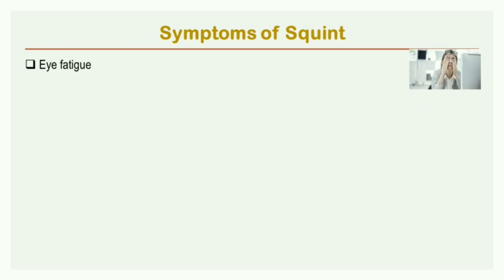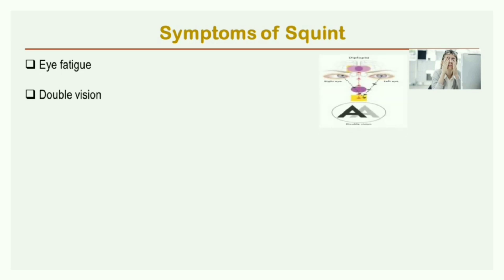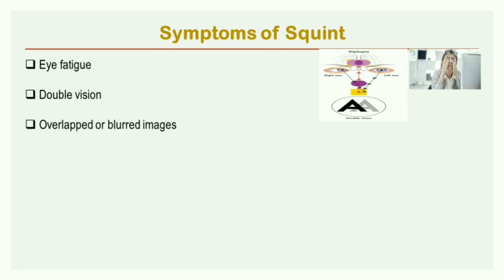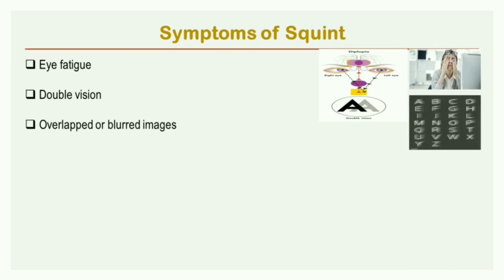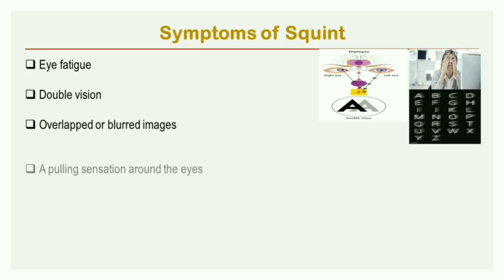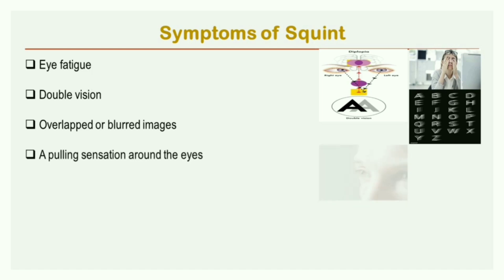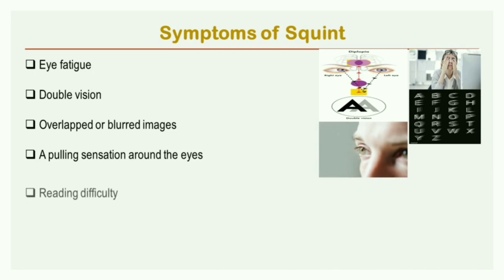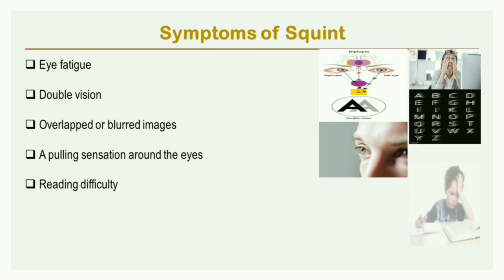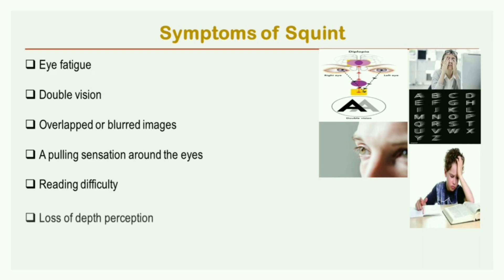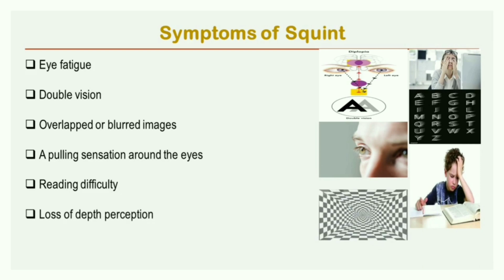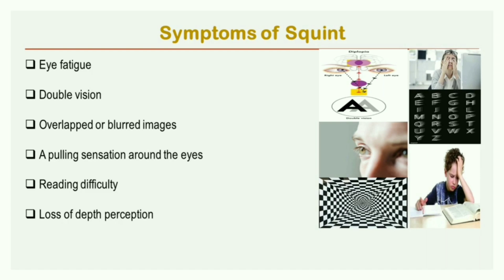Second is double vision, where you are able to see two images of a single object. Third is overlapping or blurred images of letters. Fourth is a pulling sensation around your eyes. Fifth is reading difficulty during near activities. Sixth is loss of depth perception — you will not be able to appreciate a 3D image. And the last symptom is head tilt.